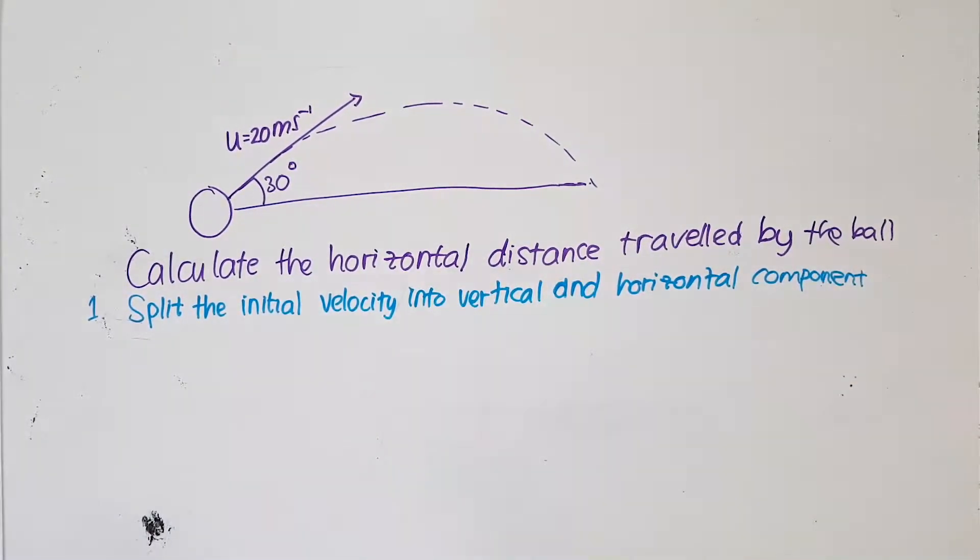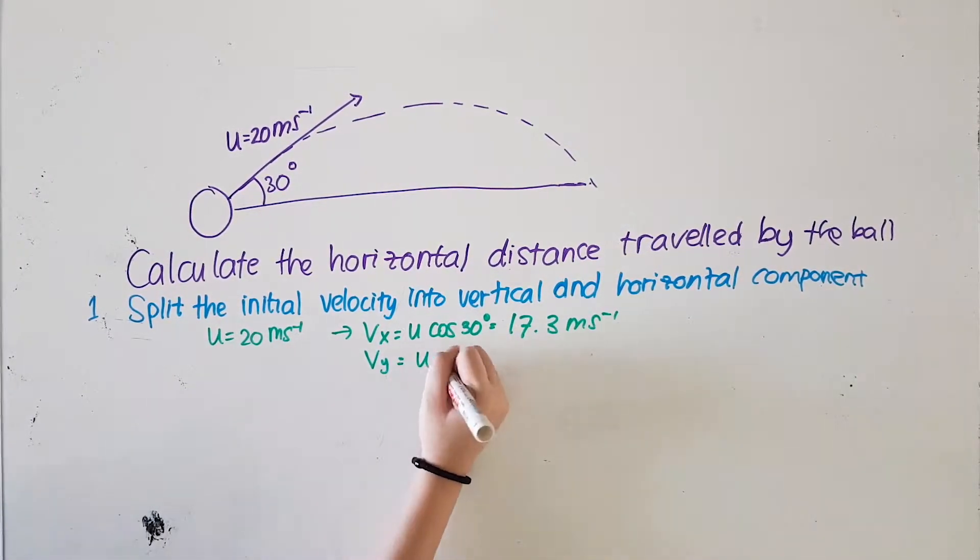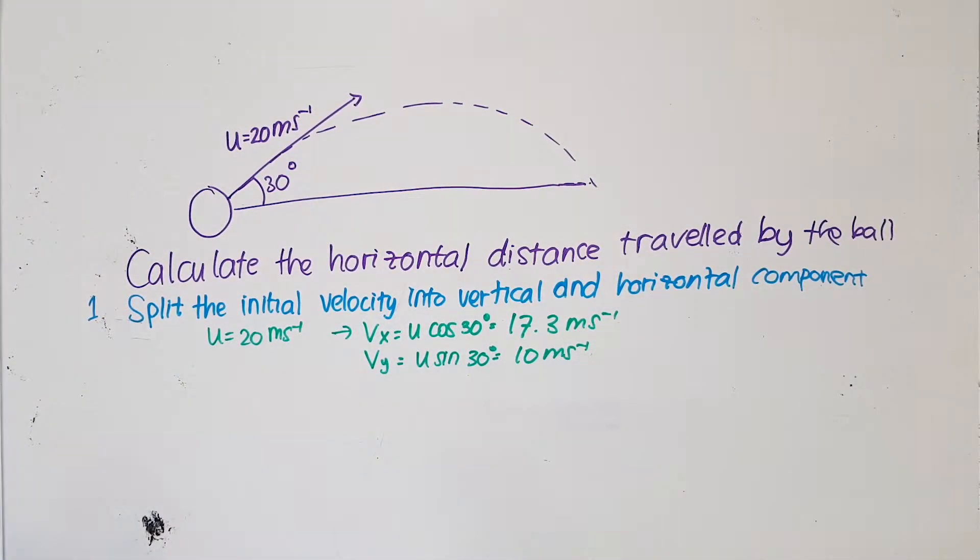The first step is to split the ball's initial velocity into horizontal and vertical components. We know that the initial velocity of the ball is 20 meter per second. Then, we multiply that with cos 30 degrees to get the horizontal component which is 17.3 meter per second. Now, multiply the initial velocity with sin 30 degrees and you will get the vertical component, 10 meter per second.